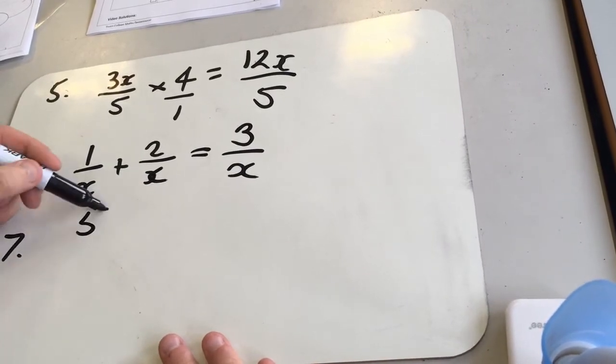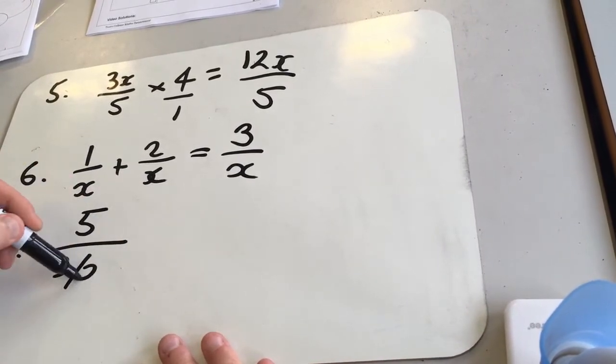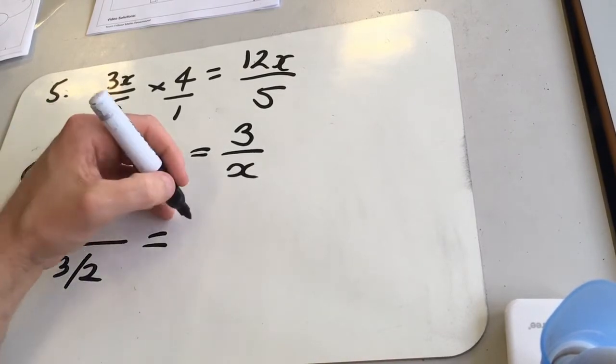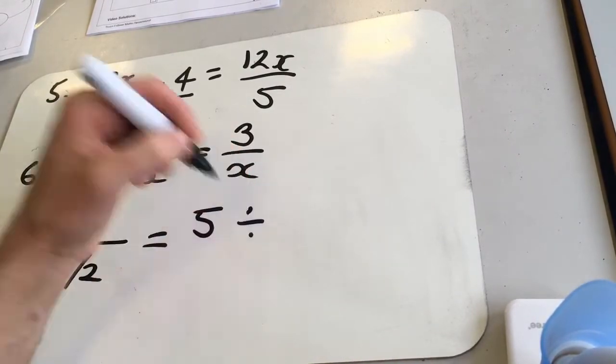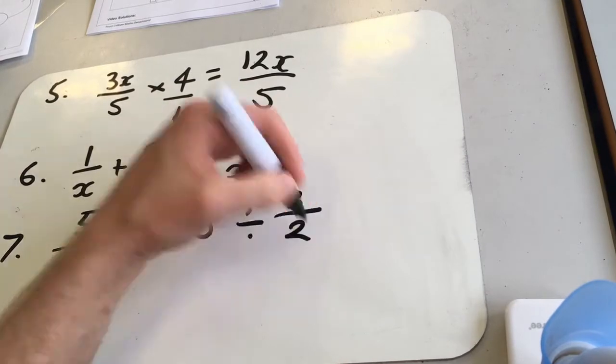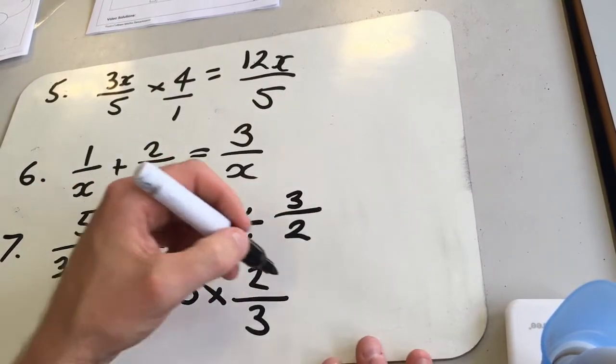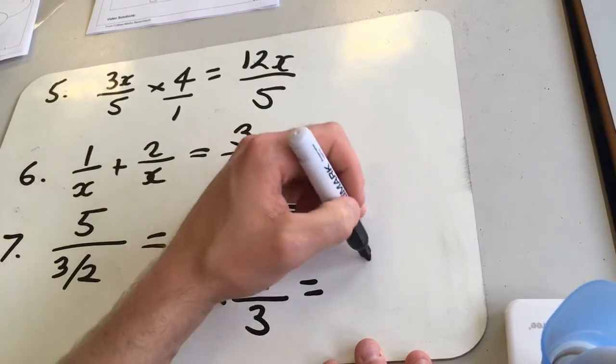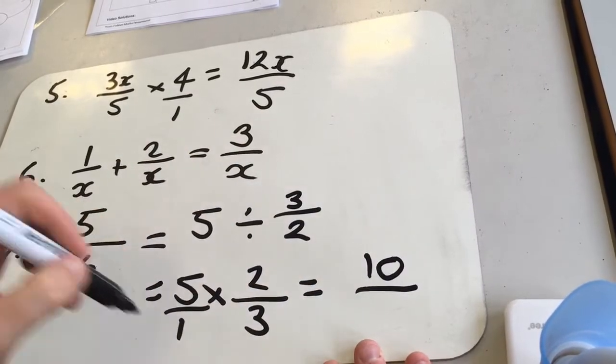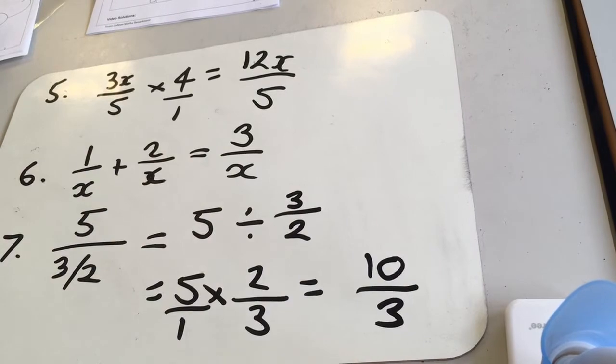Question 7, 5 over 3 over 2. Well, we'll write this one out like we did last time as well. 5 divided by 3 over 2, which is the same as 5 times 2 over 3. So times the tops, 10, times the bottoms, 3, so we get 10 over 3.